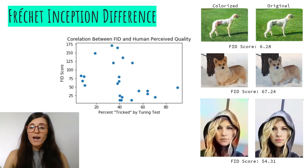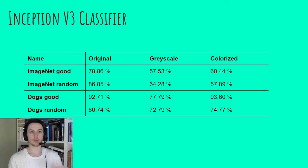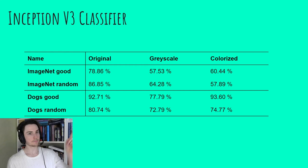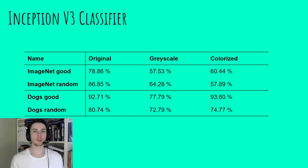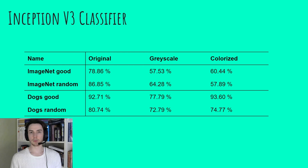To further evaluate performance, we took original images, converted them to grayscale, colorized them with our model, and then fed the results through a classifier — Inception v3 — to predict labels. Both the ImageNet and dog models were able to outperform grayscale on ImageNet benchmark images, but only the dog model outperformed on randomly chosen images. One key observation was that for some classes, correct color matters greatly: our network colorized a vehicle yellow, causing Inception v3 to predict 'taxi' when it may originally have been red — an ambulance. This suggests classification accuracy is not well-suited for evaluating a network aimed at natural-looking colorization.